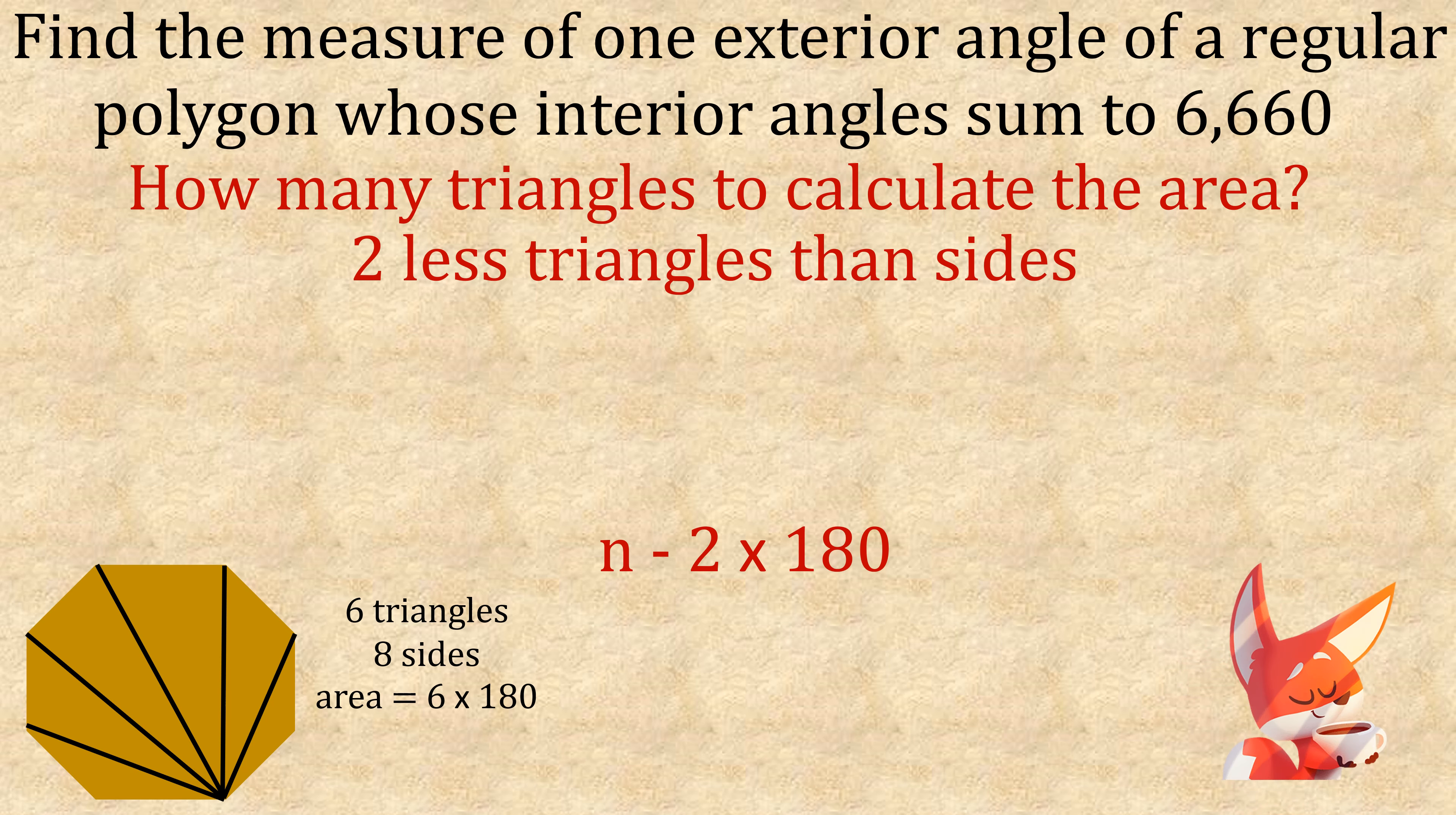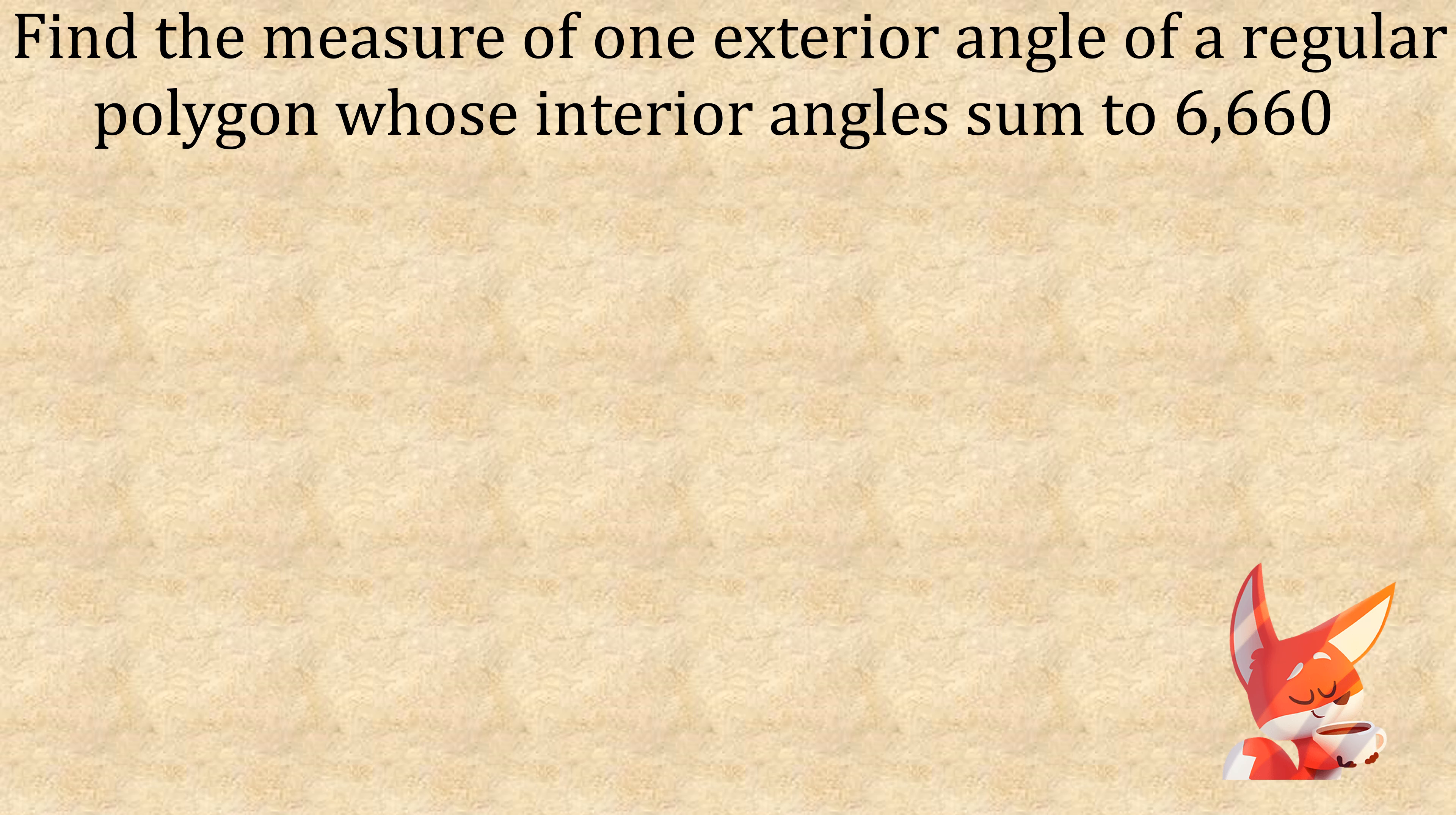What we need to do is take 6,660 and divide it by 180, which is 37. So that's 37 triangles. Doing the reverse, we need to add two sides. So 37 gives us 39 sides in total for the shape.